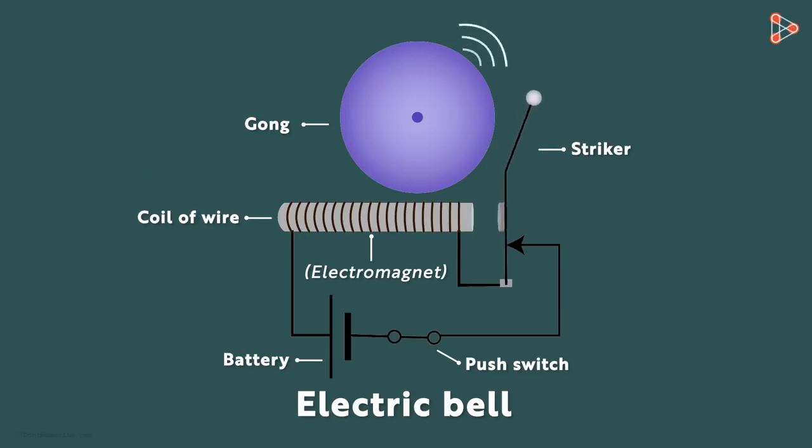This process will continue until the switch is open again. As soon as we release the push button, the circuit breaks and the bell stops ringing. That's the basic idea of how an electric bell works.